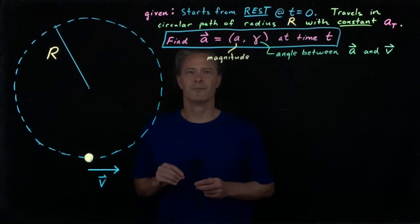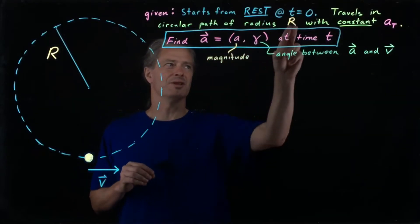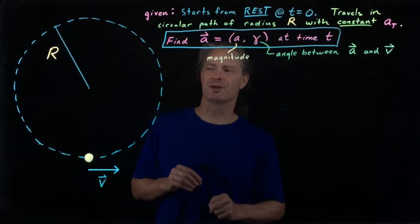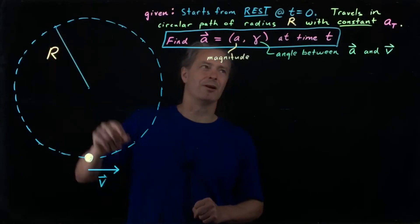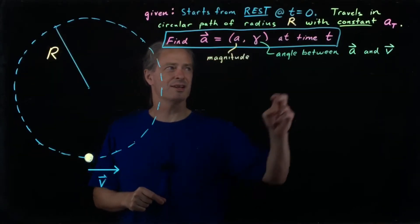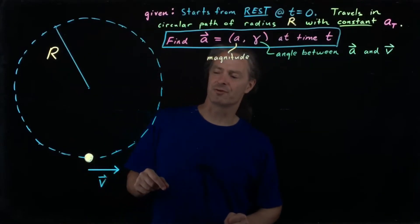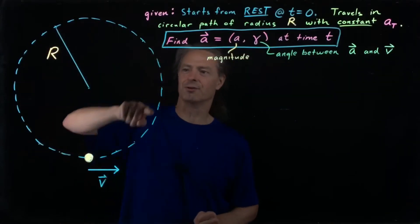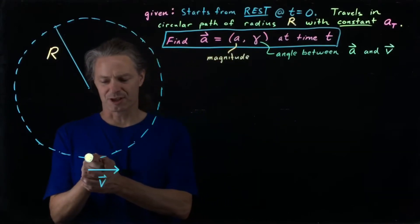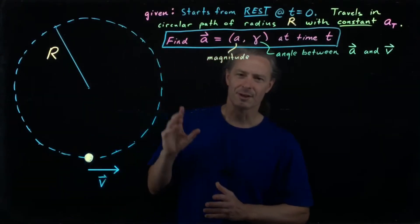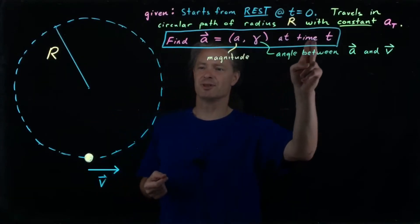Here's our problem. Imagine we have an object that starts from rest at time t equals zero. It travels in a circular path of radius capital R, and it does so with a constant tangential acceleration a sub t. Let's further imagine, just for visualization, that it's going in the circle this way, and that at time t, the object happens to be right here. Our job in this problem is to find the acceleration vector at time t.